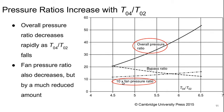If we look at the pressure ratios in the engine, these increase with T0.4 over T0.2. We see the overall pressure ratio here and the fan pressure ratio — ten times the fan pressure ratio — just so that you can see it on the same set of axes.